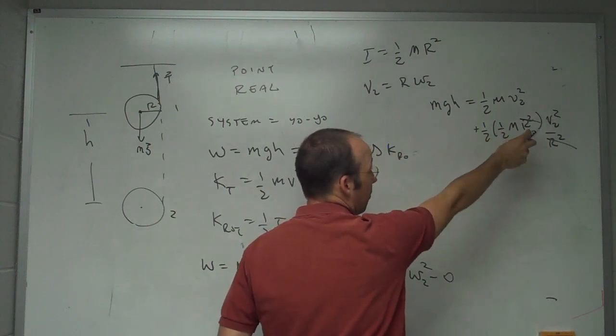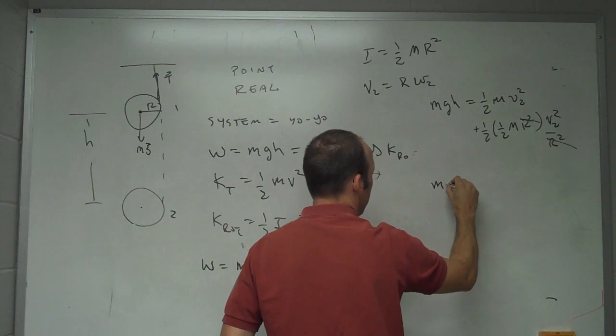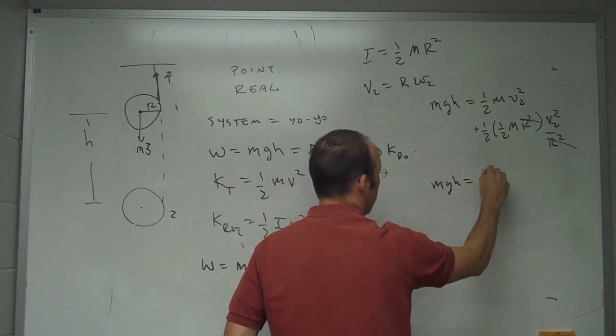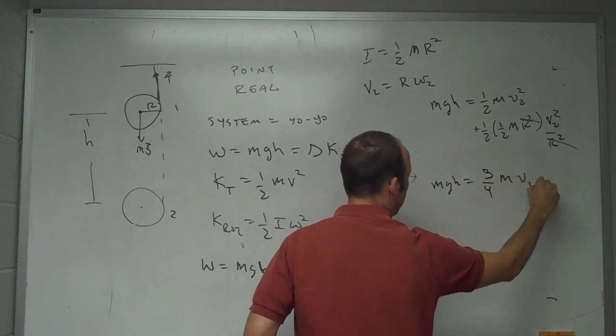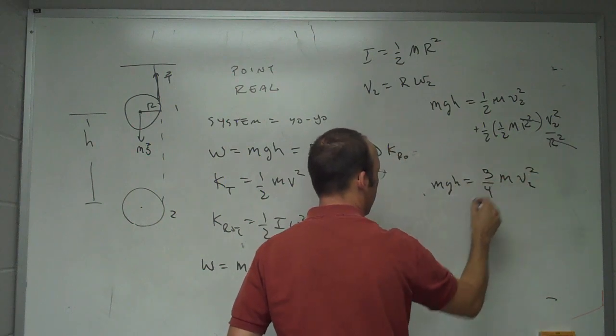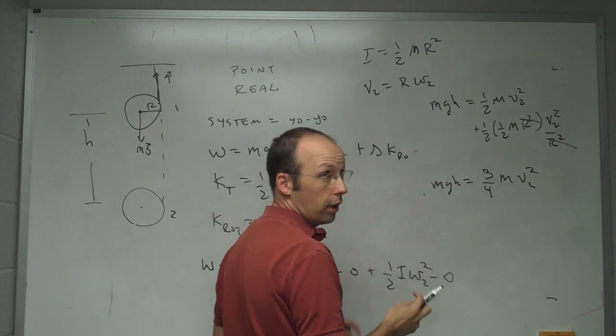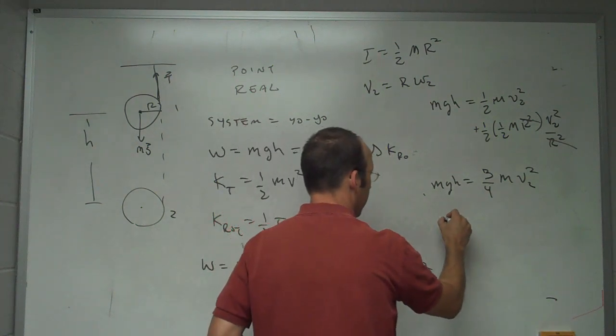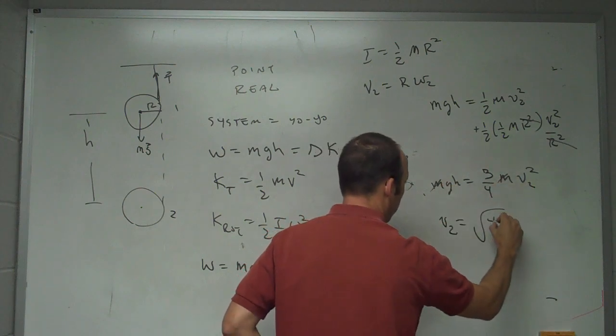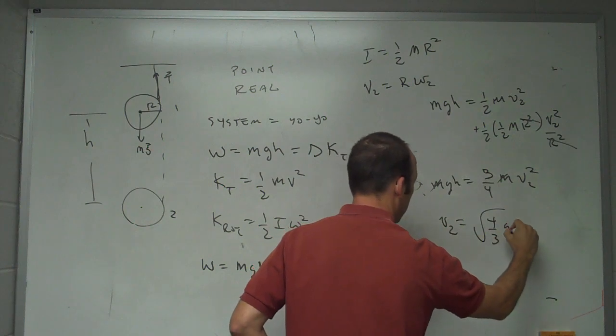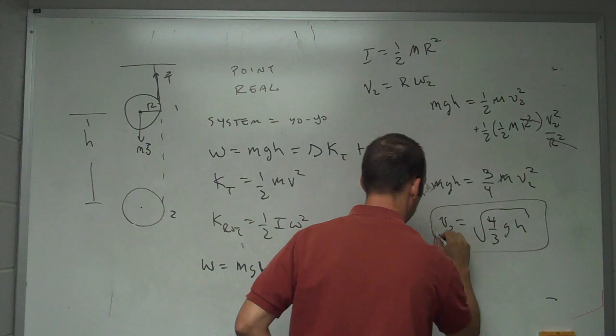And I get one-fourth m v squared plus one-half. I get mgh equals three-fourths m v2 squared and the mass is canceled. So I can solve for the velocity at the bottom and I get v2 equals the square root of four-thirds gh.